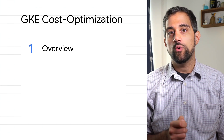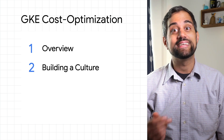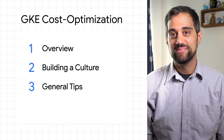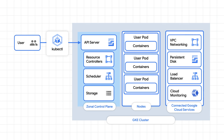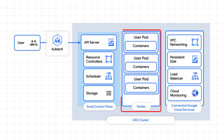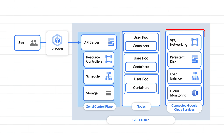I'll get started by quickly going over some basics and then talk about the business and culture side. Then I'll go over some general technical tips. Simply put, what you're paying for with GKE itself is primarily two things: the managed architecture for actually running the Kubernetes cluster, and the resources that your apps are running on, such as CPUs, memory, and storage. There are also a few other things that will affect your costs, like networking and resource location.